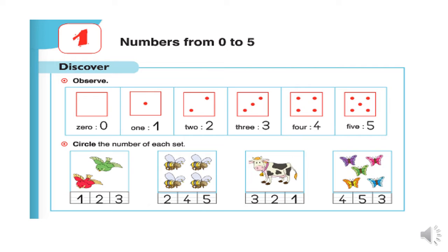Here we have how many dots? Excellent! Three dots. So, this is number three in words and number three in numbers.